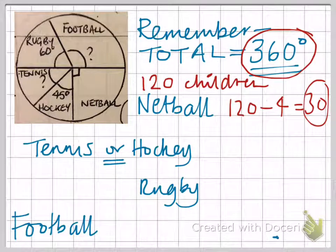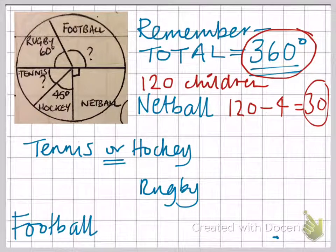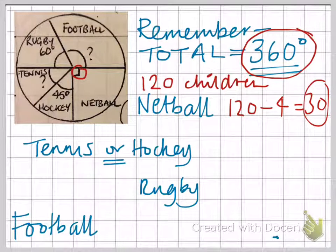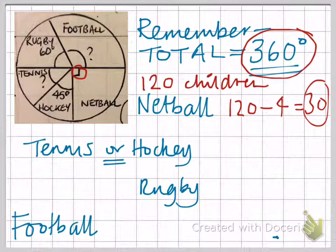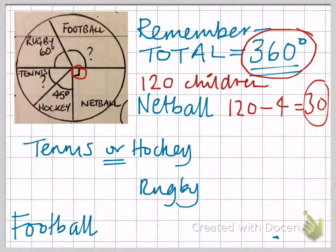From here we can work out hockey. We know that 45 degrees is half of this right angle marked here, so that means half of the netball children will do hockey. So if 30 do netball, that means hockey is 15.